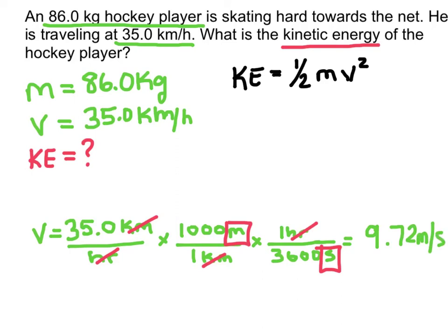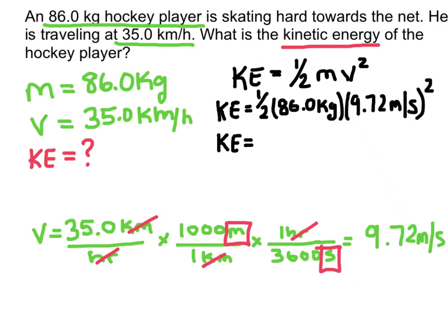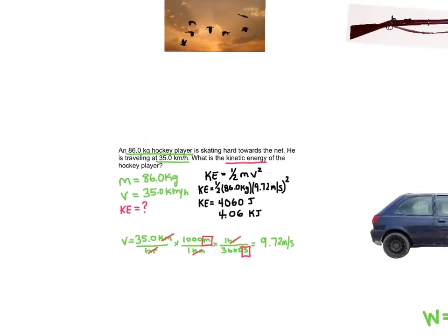Now we can go ahead and plug things into our equation. So I have my mass of 86 kilograms which we'll plug in there. And I have my velocity in SI units that I can plug in for the velocity. And so kinetic energy is going to be equal to 4060 joules. Now a lot of times if it's that big of a number we like to convert this into kilojoules. To do that we divide by 1000 because kilo means 1000. And so this would be the same thing as 4.06 kilojoules. And that is kinetic energy.